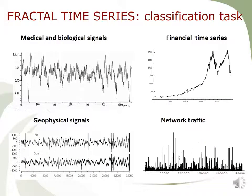The world around us is fractal and random. Fractals are objects that preserve their structure at scaling. Fractal random processes preserve their distribution law at time scaling. Many time series of complex technical and natural systems have fractal properties — these include medical and biological signals, financial series, seismic signals, and telecommunication traffic.